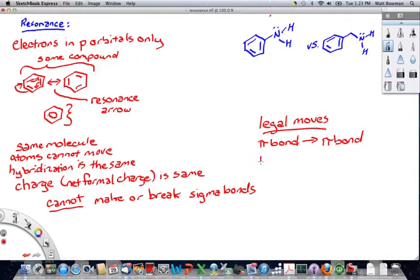You can use a pi bond and change it into a lone pair on an atom. Providing that's, of course, in a pi bond.